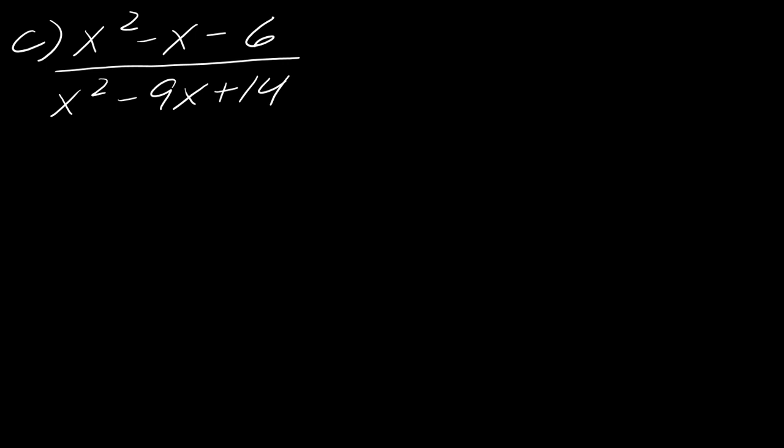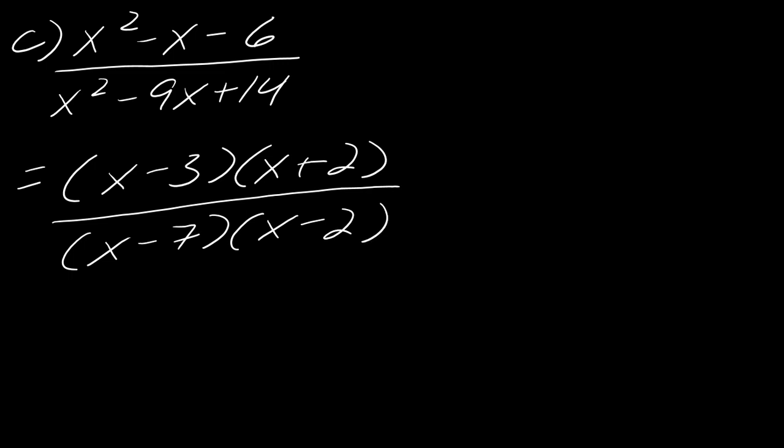Okay, so for c here, this will factor as x minus 3 times x plus 2 on the top. So double check that you got your signs right with that. And then in the denominator, this will be x minus 7 and x minus 2. Well darn, so you can't go any farther with this. There's nothing that we can cancel out. You might say, oh, I've got the 2 and the 2, but these are different signs. So this is actually already simplified. And okay then, I guess we did all that work for nothing. It happens, you know?